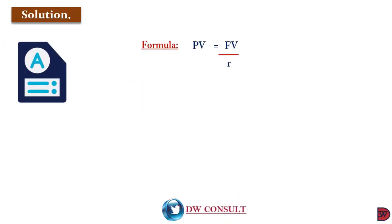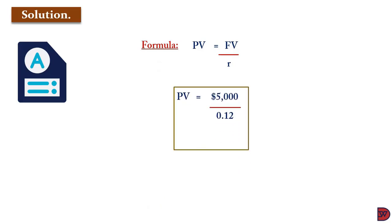The formula is: present value equals future value divided by r. The future value is $5,000 divided by 12%, which is 0.12. So it is $41,667. So here there is no perpetuity factor to work out, so there is no table to be provided.